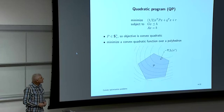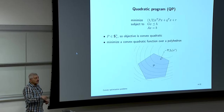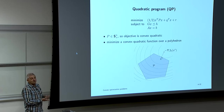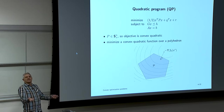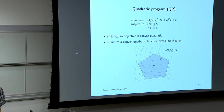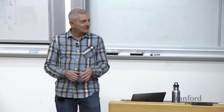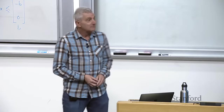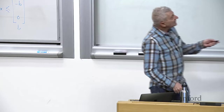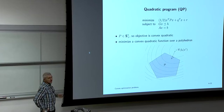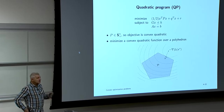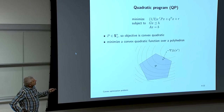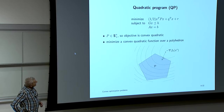Around the early 1950s comes the quadratic program (QP). Like LP, but the objective is a convex quadratic. Constraints are still linear — a polyhedron as feasible set — but the level sets of the objective are now surfaces of ellipsoids (if P is positive definite).